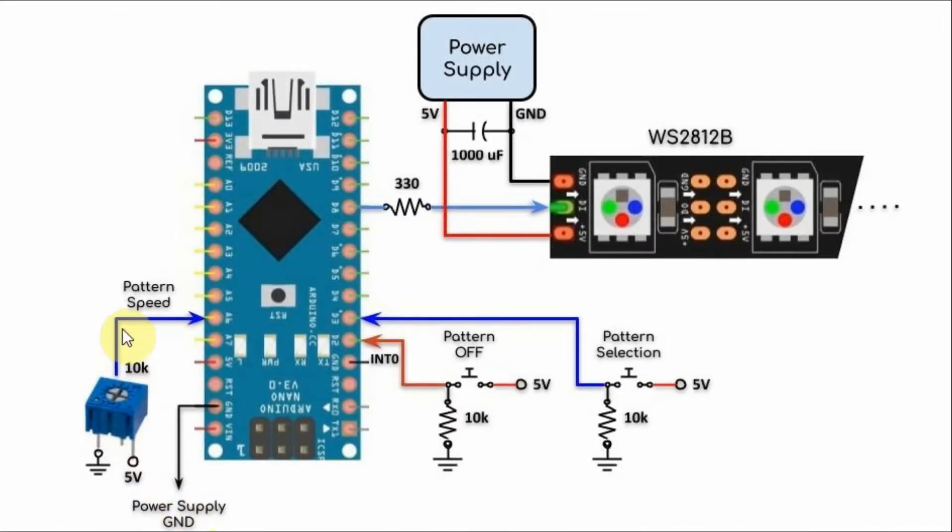Finally, a 10K pot connected to analog pin A6 is used to change the speed of the displayed pattern.